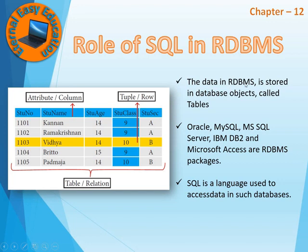Data in RDBMS is stored in database objects called tables. A table is a collection of columns and rows. A column represents the vertical position — that is the attribute, or simply the field name. A row is called a tuple; it is horizontal. A single row gives complete information about one entity — it may be an object, a book, a person, or anything. For example, one row could contain a student number, name Vidya, age 14, class 10, section B — that is complete information.